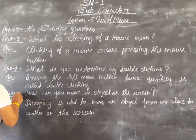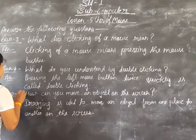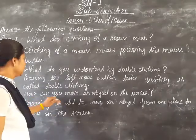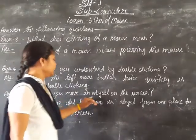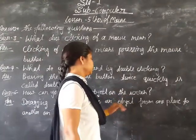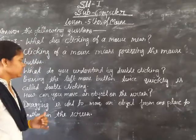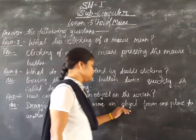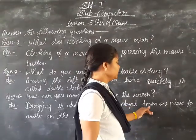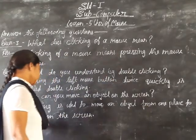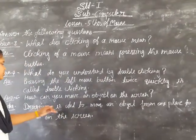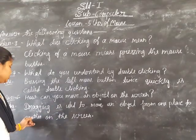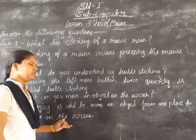Question number fifth, fifth and last: how can you move an object on the screen? Answer: dragging is used to move an object from one place to another on the screen.